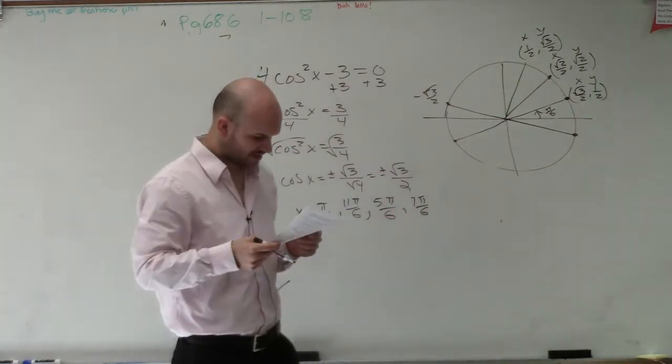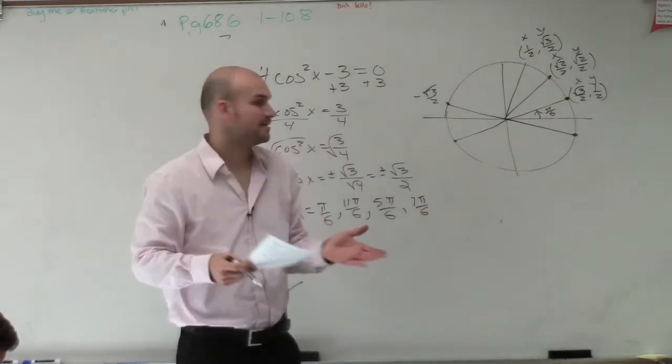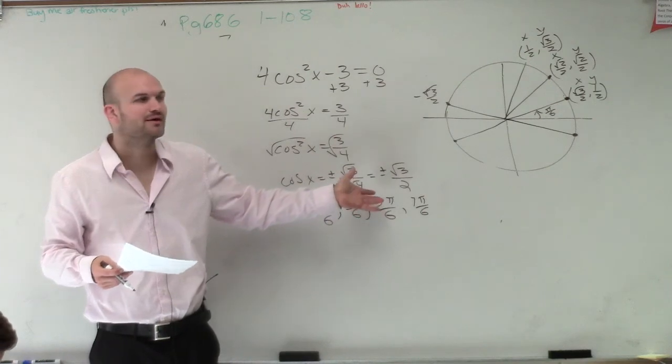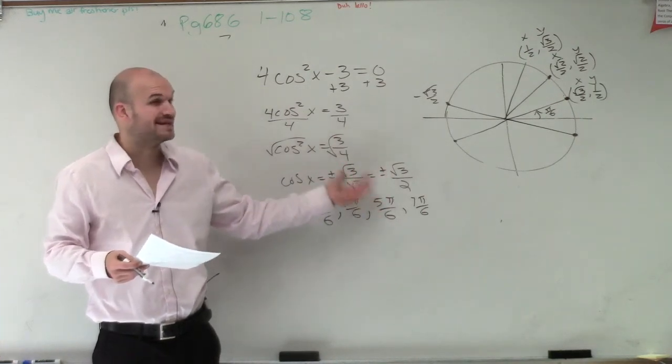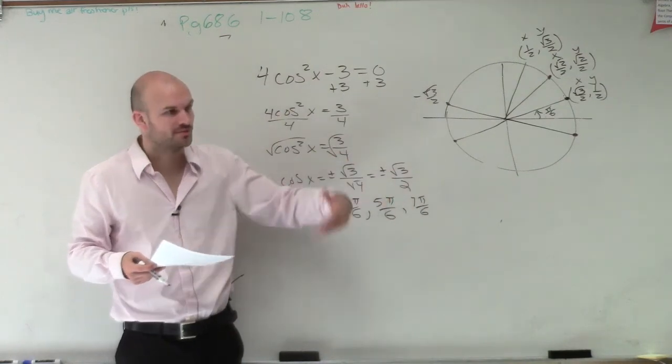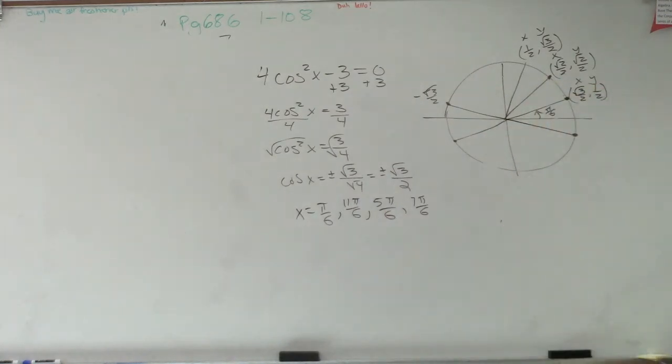And do they give us a constraint on this one? Yes, they say between 0 and 2 pi. So these would be your only values, right? And then remember what we could do is if they didn't give us a constraint, remember that's plus 2 pi n, which would be coterminal angles that you could do, right? Not for me. I love this stuff.